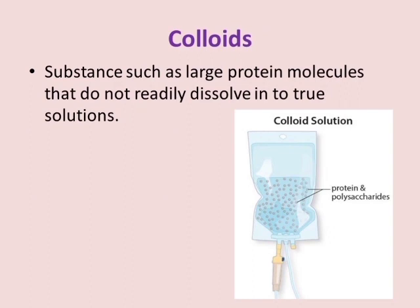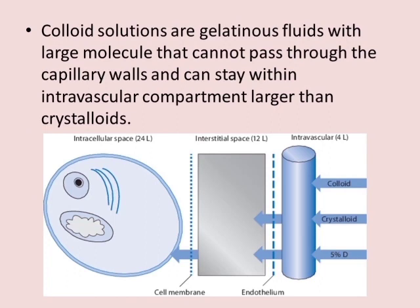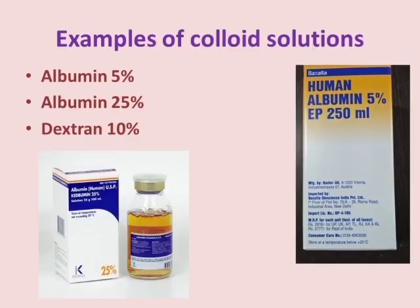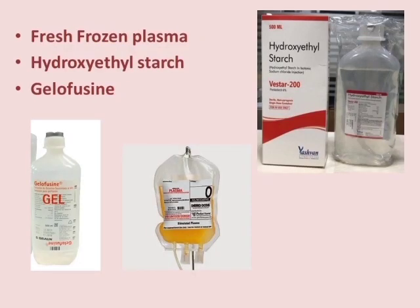Colloids are substances such as large protein molecules that do not readily dissolve into solution. Colloid solutions are gelatinous fluids with large molecules that cannot pass through the capillary walls and can stay within the intravascular compartment longer than crystalloids. Colloids are mainly used to increase plasma volume and maintain high osmotic pressure of the blood. Examples include albumin 5%, albumin 25%, dextran 10%, fresh frozen plasma, and hydroxyethyl starch.